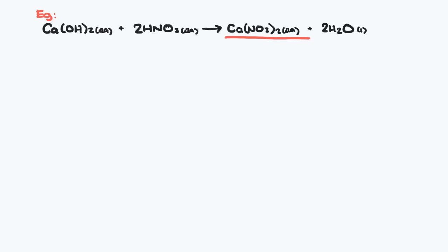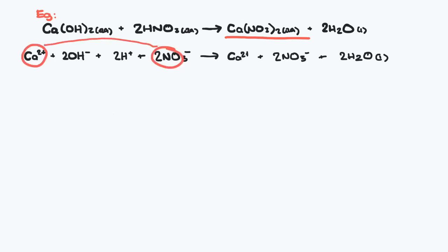Once again, this is best done by writing the full ionic equation, which is really time consuming, but eventually you can do this in your head. Calcium ion is attracted to the nitrate ion, so there's your salt, and water is your other product too.